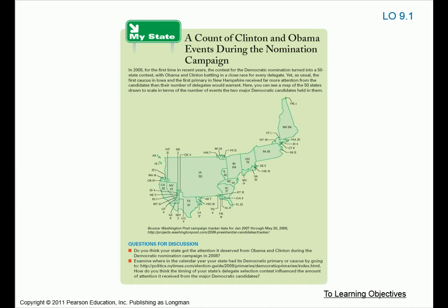This chart shows the amount of attention that each of the states got. Texas and California are the largest states in the country, yet the ones that got the most attention were states like Iowa, New Hampshire, Ohio, and Indiana. A lot of other states didn't matter at all — because of the number of delegates they were offering at the national conventions and when their primaries were taking place.